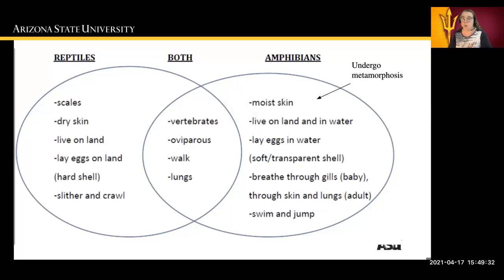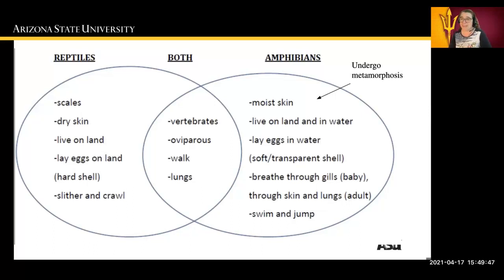Amphibians, conversely, have moist skin. They can live on land but generally like to live near the water. They lay their eggs in water in soft, transparent shells. They breathe through gills as babies and through skin and lungs as adults. They like to swim and jump, and they undergo metamorphosis.